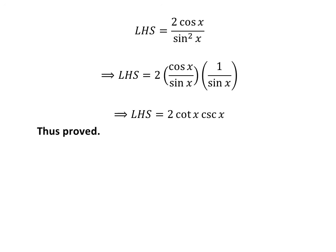We know cosine of x upon sine of x is equal to cotangent of x, and 1 upon sine of x is equal to cosecant of x. So the left hand side of the identity is equal to 2 times cotangent of x times cosecant of x, which is equal to the right hand side of the identity.